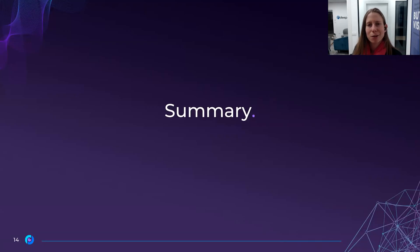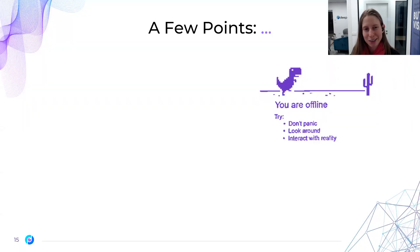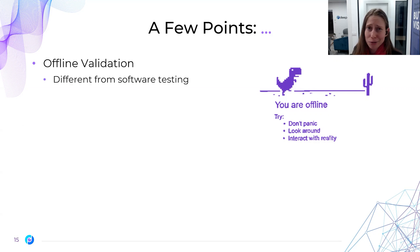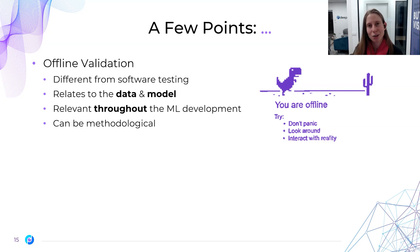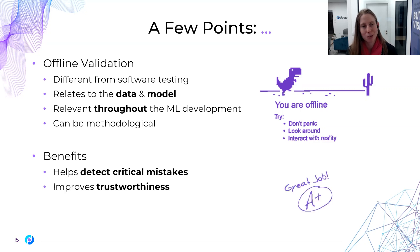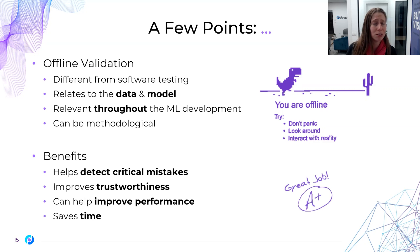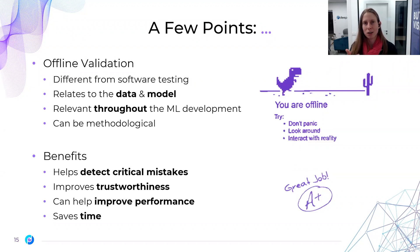Summarizing the topics we talked about: we talked about offline validation — be happy that you have the opportunity to validate your model offline. It's very different from software testing, so we have different tools and ideas. We have to check the data, the model, and the relation between them, and do so throughout the machine learning development lifecycle. It can be done in a methodological manner, which will help us check more cases in a more efficient way. The benefits: we can find critical mistakes, improve the trustworthiness of our model, improve performance, and save time by finding problems we might otherwise detect only later. Once we have it in a convenient form, we can also reuse and run the same code, tools, and checks to have everything covered.